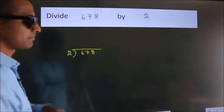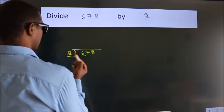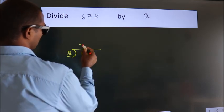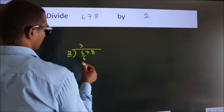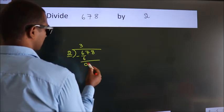Next. Here we have 6, here 2. When do we get 6? In 2 table, 2, 3 is 6. Now we should subtract. We get 0.